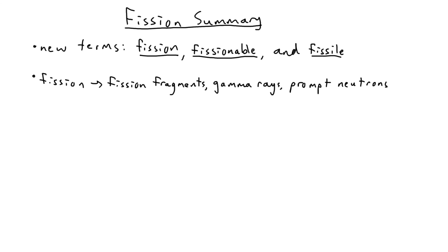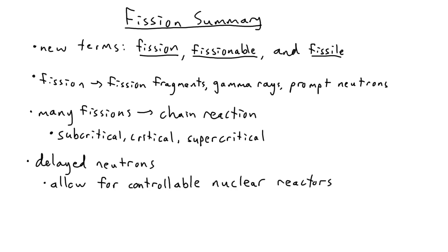So, to sum up, we learned about the terms fission, fissionable, and fissile. We also learned that when an atom fissions, we get many pieces like fission products, gamma rays, and neutrons. When a lot of atoms fission, we can get a chain reaction with three possible outcomes, subcritical, critical, and supercritical. And we also learned about delayed neutrons that make an otherwise impossible critical chain reaction possible.